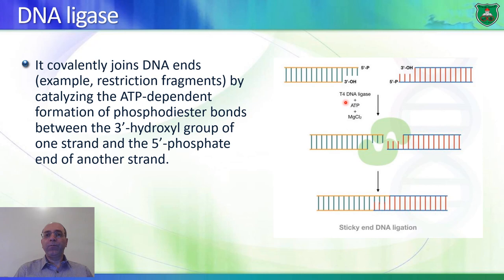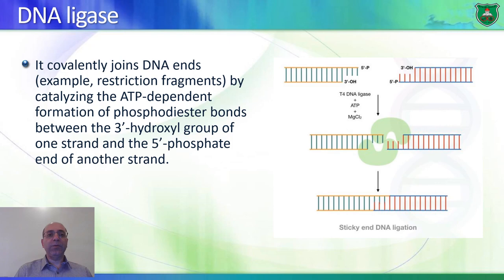If you add a DNA ligase, which needs ATP, you will have the formation of phosphodiester bonds between the two strands, and you will have a recombinant DNA.